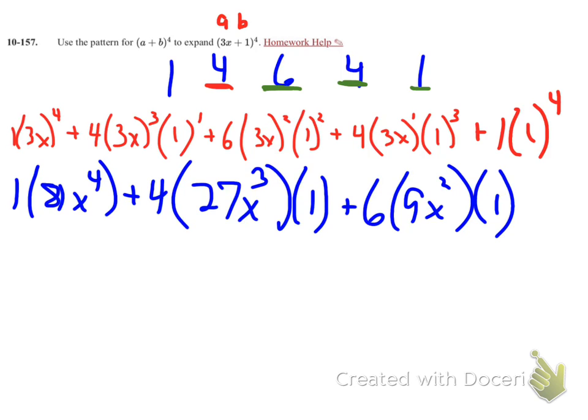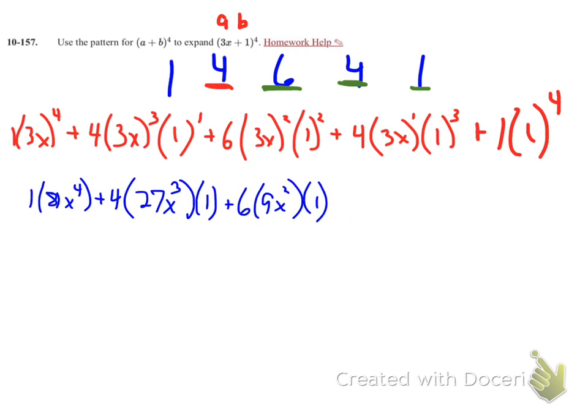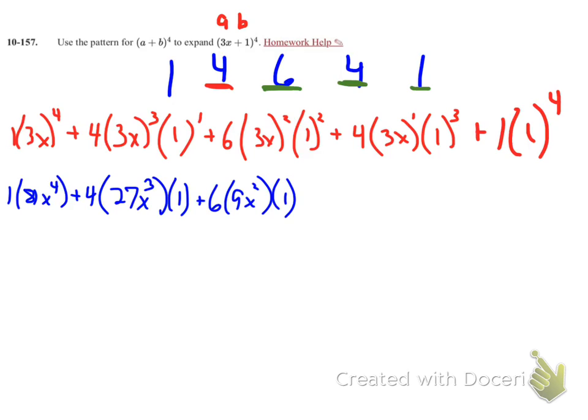My next term: coefficient of 4, 3x to the 1st is just 3x, and 1 to the 3rd is just 1. And my last term: a coefficient of 1, and 1 to the 4th is 1.